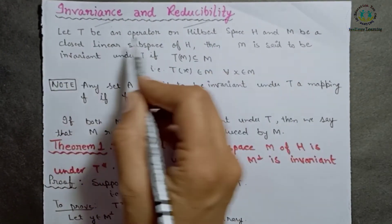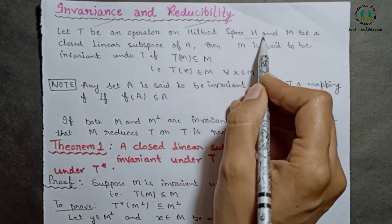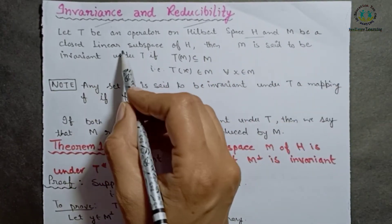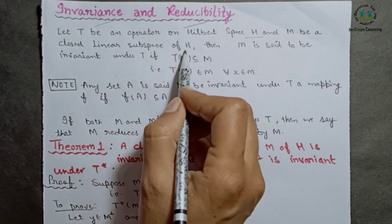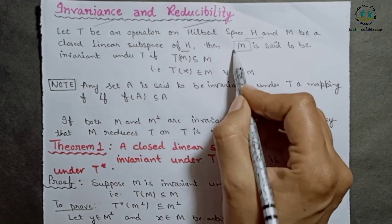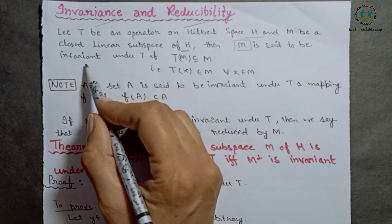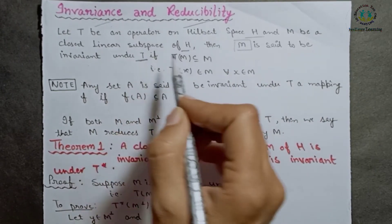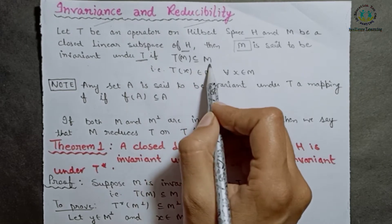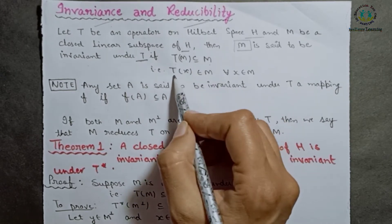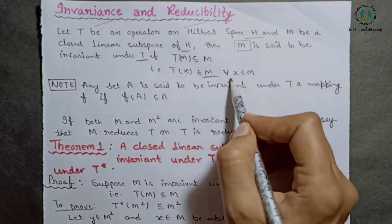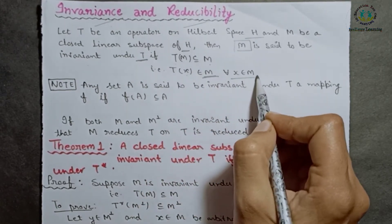Let T be an operator on Hilbert space H and M be a closed linear subspace of H. Then set M is said to be invariant under operator T if T(M) is a subset of M, i.e., Tx belongs to M for every x belonging to M.